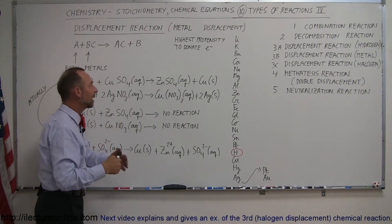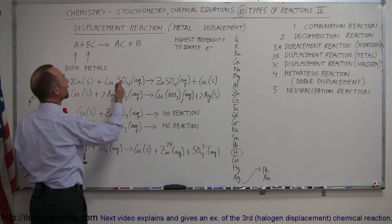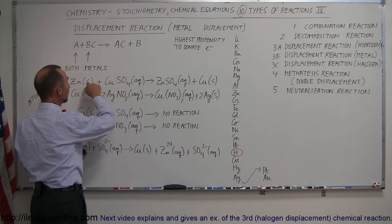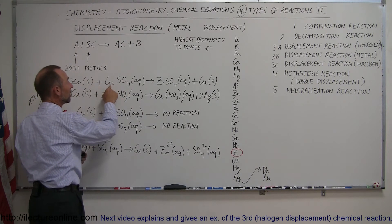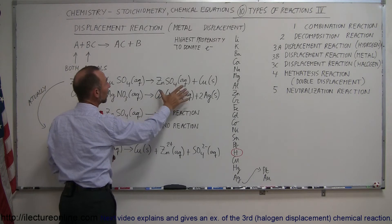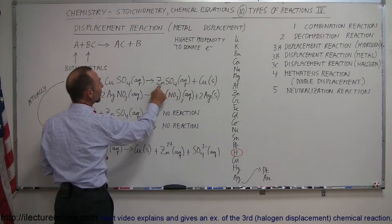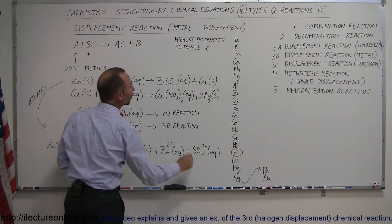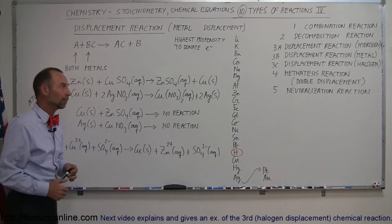What happens then is zinc will come along and be more than happy to donate its electrons to the sulfate ion. Sulfate will accept zinc's electrons rather than copper's. So copper is being shut out, electrons are provided by zinc, and copper then precipitates out as a solid.